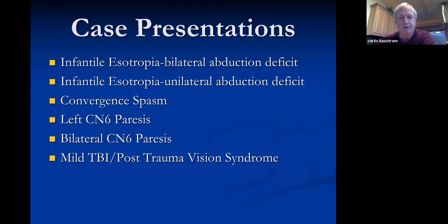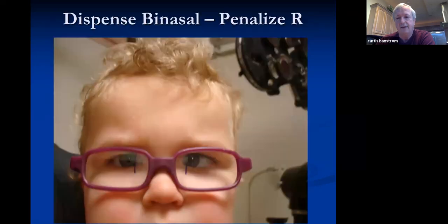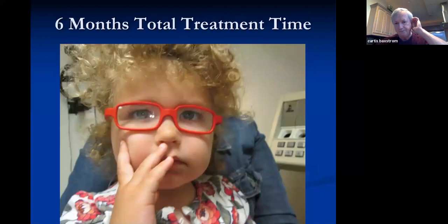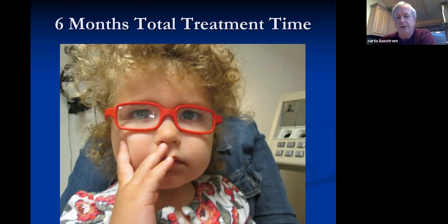Case presentations: infantile esotropes commonly have bilateral abduction deficits, sometimes unilateral. We can use binasals for convergent spasm, left cranial nerve six paresis, bilateral sixth nerve paresis, and brain injury. Here is an example of dispensing with asymmetry set up for a patient with primarily left ET. We did therapy including red-green activities with even a young two-year-old. Six months later, she is maintaining fusion and holding both eyes together with continued therapy. She is now about 16 years old and doing great.